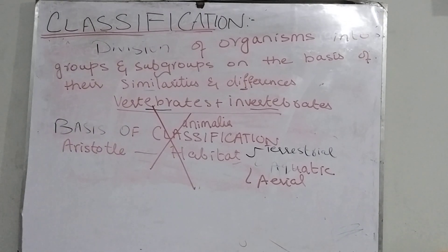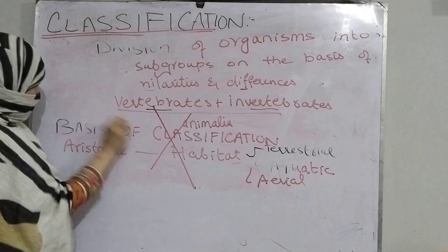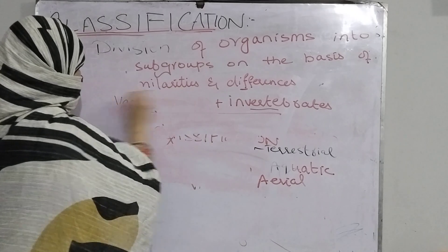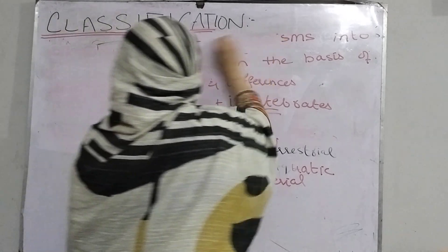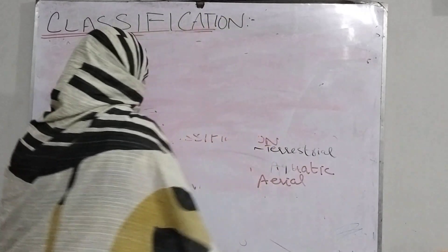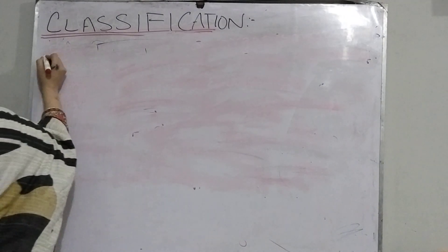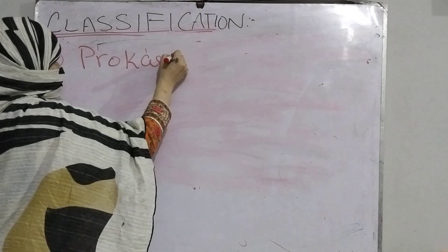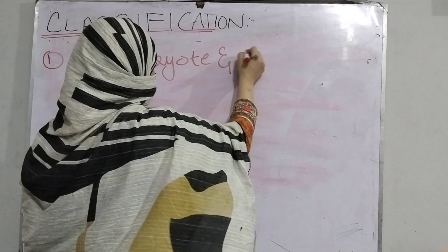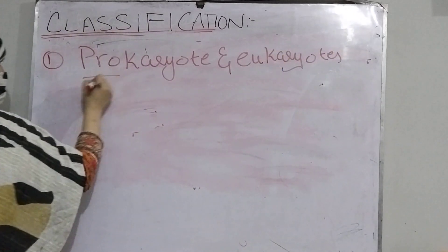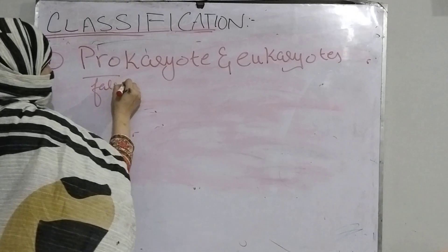Then biologists looked at physical appearance — the physical characteristics of an organism. The first basis is whether the organism is prokaryote or eukaryote. Pro means false and karyon means nucleus. So organisms or cells which do not have a proper nucleus and other membrane-bounded organelles are called prokaryotes.